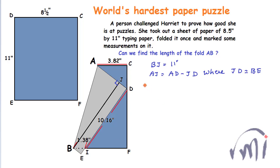Here if you see properly triangle EBI is a right angle triangle where angle E is 90 degrees right and EI will be equal to 11 minus 10.16 that is 0.84 inches and BI is given as 1.38 inches so BE will be equal to square root of 1.38 square minus 0.84 square.